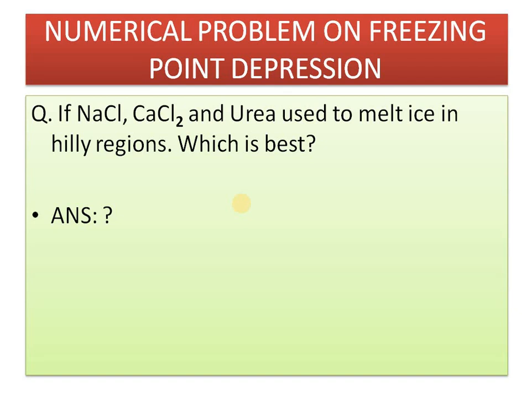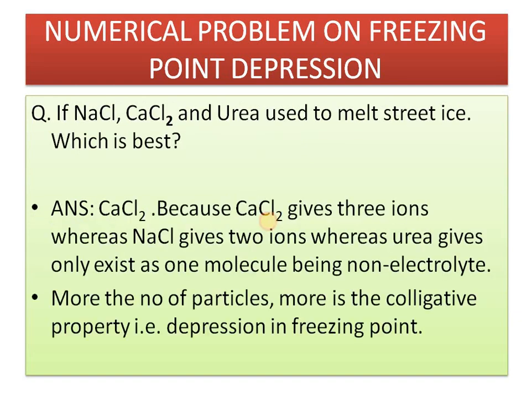Now let us discuss numericals on depression of freezing point and boiling point elevation involving the i-factor. NaCl, CaCl₂, and urea are used to melt ice in cold regions — that is depression of freezing point. Which will be the best? The best is where the colligative property is maximum, and colligative property is maximum when i is maximum. i for urea is 1, CaCl₂ is 3, NaCl is 2. So CaCl₂ will be the best.